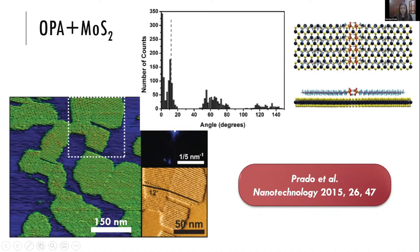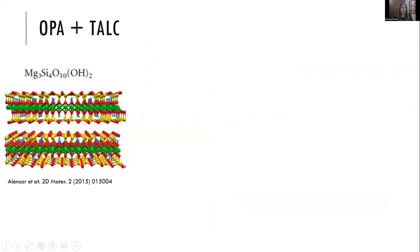Finally, we tried OPA on talc. Talc is a phyllosilicate, very abundant in the state where we work. It's formed by silicon, oxygen, and magnesium. We have silica layers on the outside, as demonstrated by collaborators, and magnesium atoms inside the silica layers. This can be exfoliated down to a single layer. It has hexagonal symmetry on the surface but also has oxygen atoms, so the phosphonic acid can form hydrogen bonds.